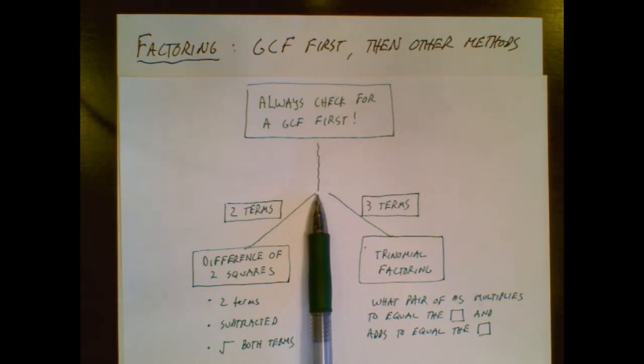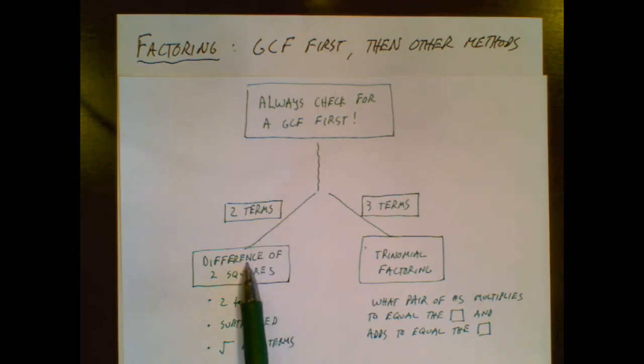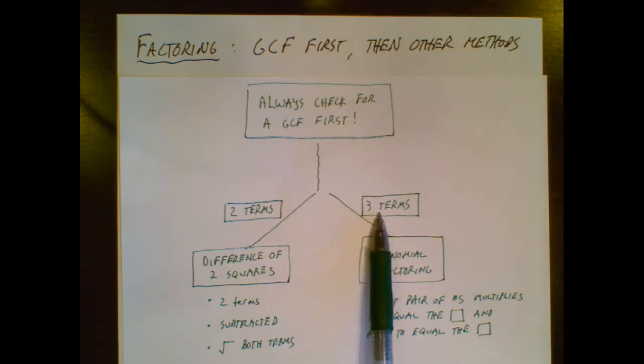After you check for the GCF, then you're just going to look and say, hey, should I go to this difference of two squares factoring that we did before? Or should I try this three term trinomial factoring?